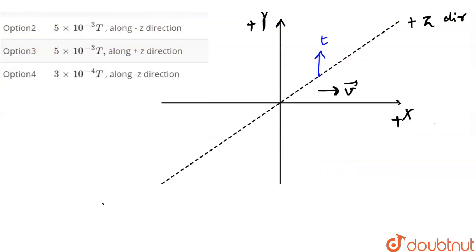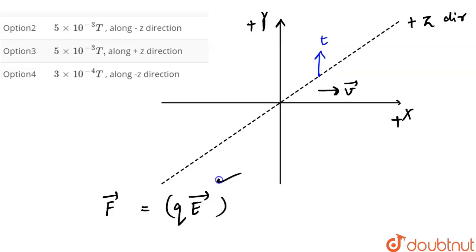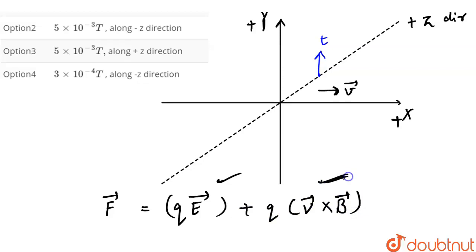The force on a charge moving in an electric field and magnetic field — we know this is: F vector is equal to Q times E vector. This is the force acting on the charge particle due to the electric field, plus Q times V vector cross B vector. This is the force acting on the charge particle in the magnetic field.